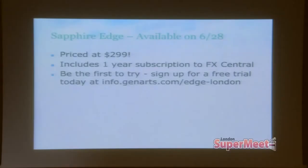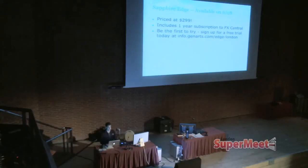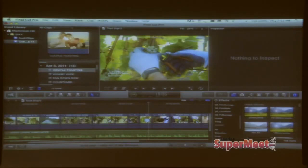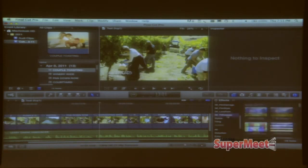I want to show some cool stuff we have in here with FCPX. A little bit of background about Sapphire Edge — it's priced at $299, a very affordable price. With that it includes a one-year subscription to FX Central, which is going to be offering downloads every month of new presets. This is our world premiere tonight — we're first announcing it. You can go to the website on our screen or come up to our table outside. When we first release that, we are offering a two-week trial so you can use it watermark free and really get a good sense of how it looks.